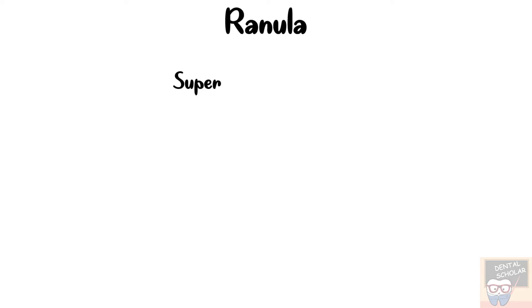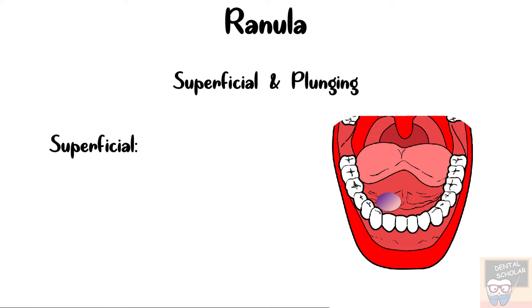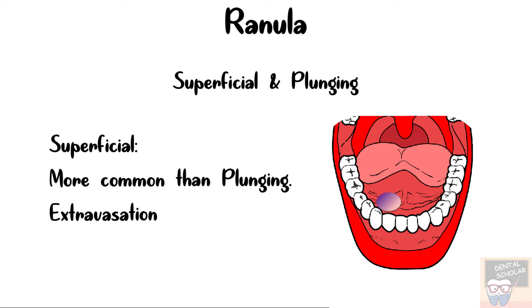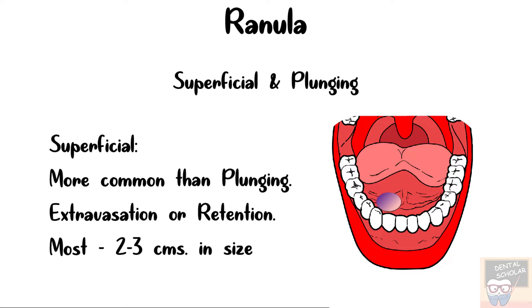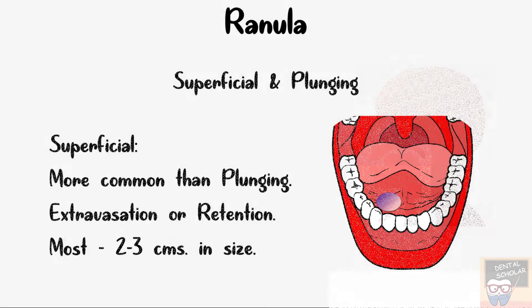A ranula may be classified as either superficial or plunging. The superficial variety is more common than the plunging and it may be described as either extravasation or retention type. Most of these lesions are 2 to 3 centimeters in size. As you can see in the diagram, the superficial cyst would be seen in the floor of the mouth as a bluish dome-like swelling.